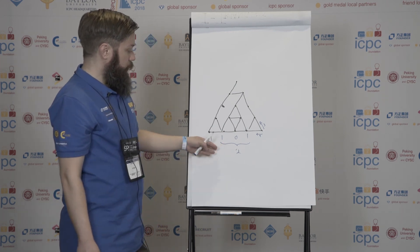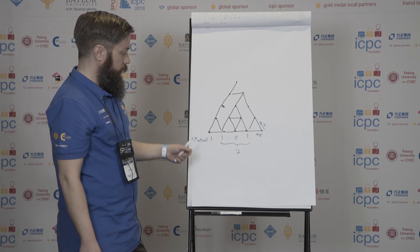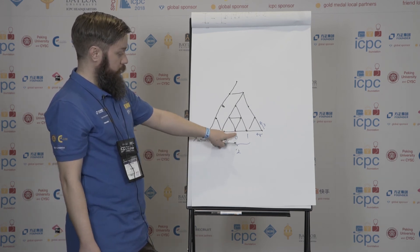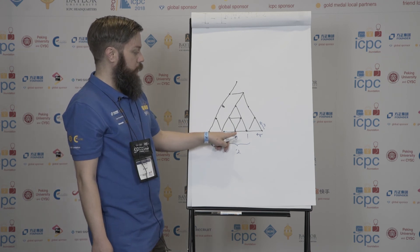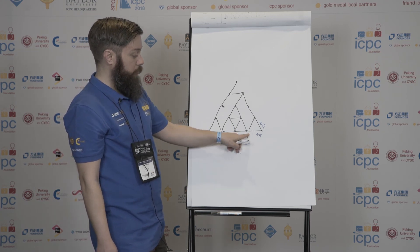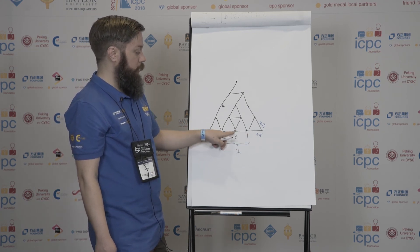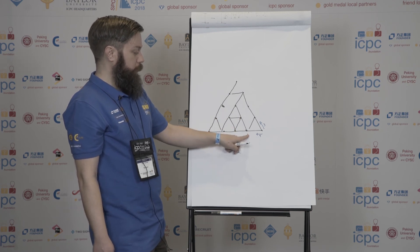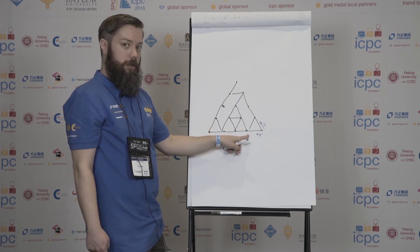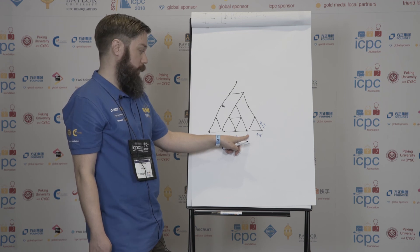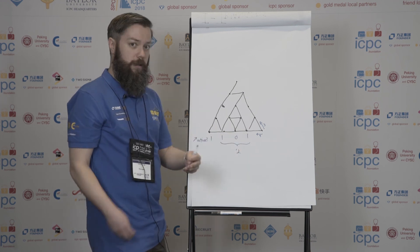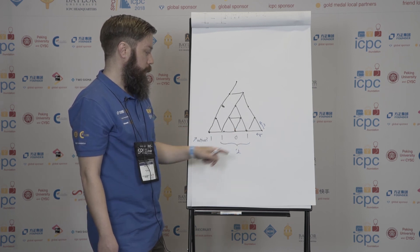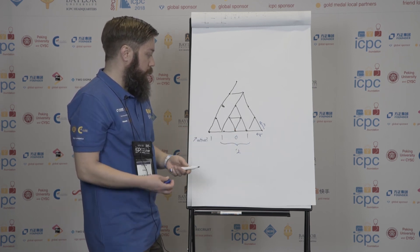To keep track of which points are active, when we process a point it initially becomes active, and we schedule an event so that after we finish the corresponding vertex, we turn that point off. So we put it as an event to process after we are done with that vertex. And that's about it.